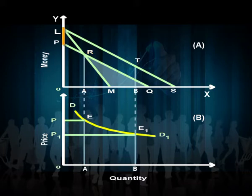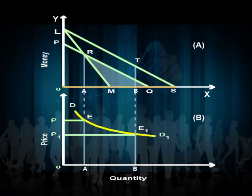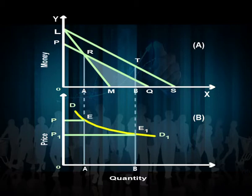If the LP amount of money taken from the consumer is returned, the consumer will prefer point T where he can buy more of good G. Using panel A, we can construct the demand curve in panel B: when the price of G is OL/OM (i.e., OP in panel B) the demand is OA, and when the price falls to OL/OS the demand increases from OA to OB. Joining these combinations as points E and E1 in panel B gives a smooth demand curve.